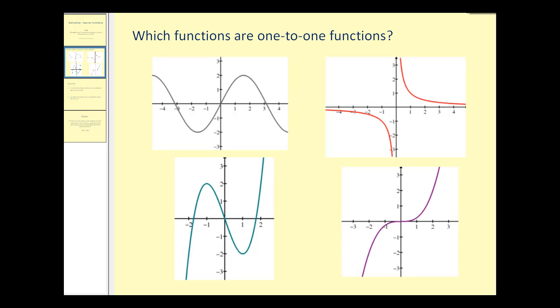Remember, to determine if a function is one-to-one, we perform what's called a horizontal line test. If a horizontal line intersects the graph in more than one point, it's not a one-to-one function. Here we have four functions. This first function is not one-to-one because these horizontal lines intersect the graph in more than one point.